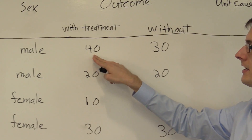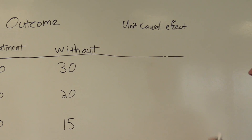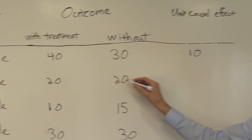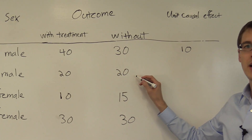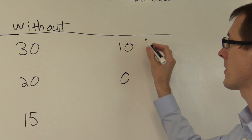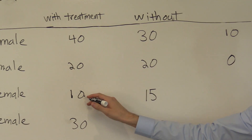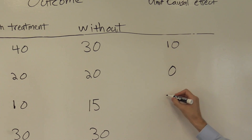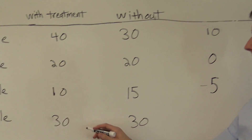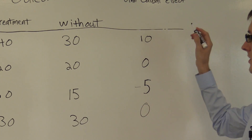The first person, if treated, gets 40; if not treated, gets 30. So his unit causal effect is 10 (40 minus 30). The second person gets 20 with treatment and 20 without, so their unit causal effect is 0 (20 minus 20). The third person gets 10 with treatment and 15 without, so their unit causal effect is minus 5 (10 minus 15). The last person has 30 with treatment and 30 without, so she also has a unit causal effect of 0.